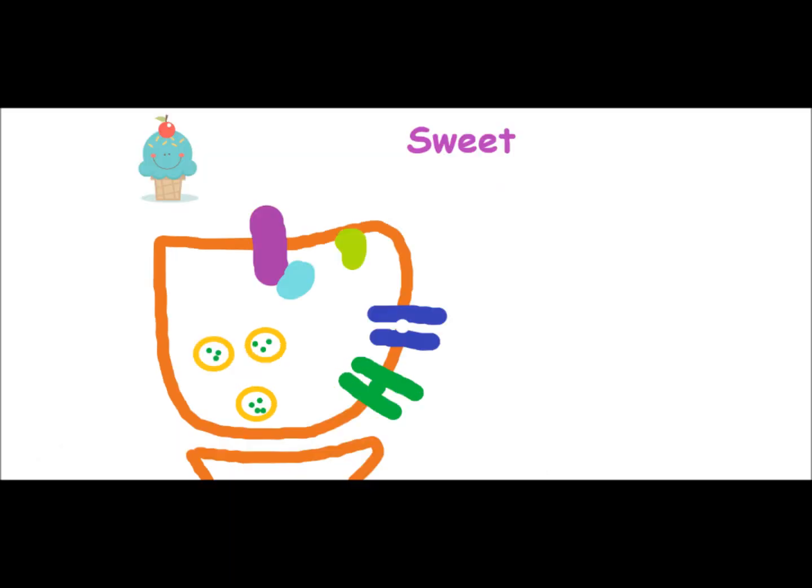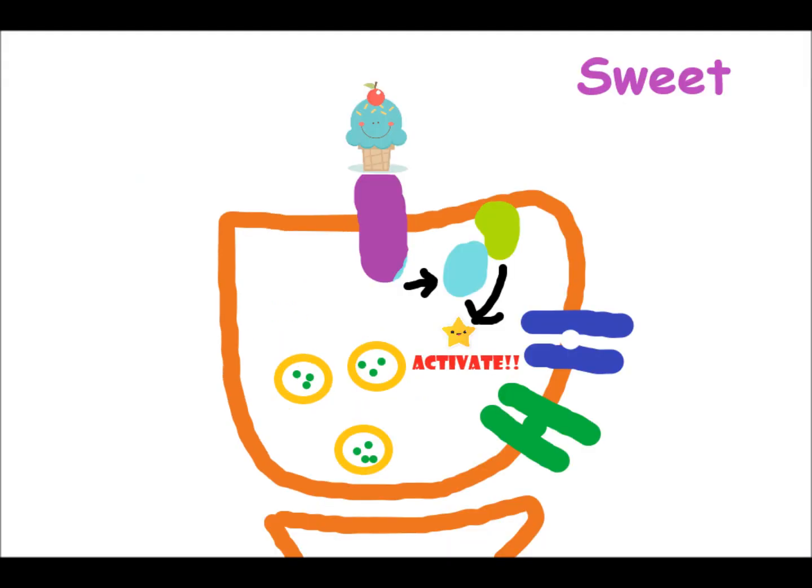Now, let's look at how we can transduce a signal from something that is sweet. A receptor for sweet things have a special G-protein on its surface, which combine with a sugar molecule. Once bound, the G-protein signals to another surface protein, which activates a special type of control protein called a kinase, which we'll depict with a star.